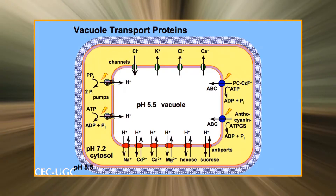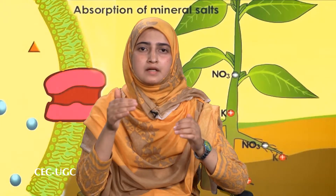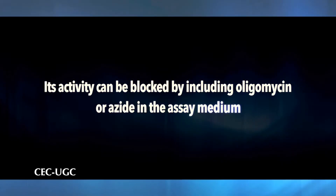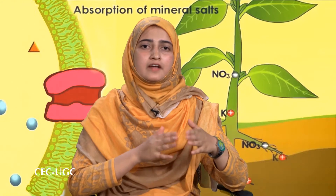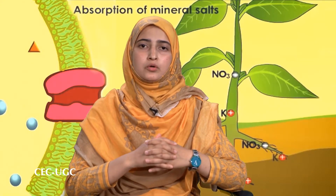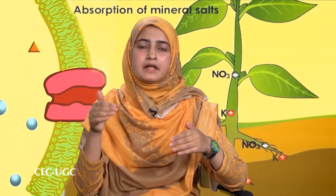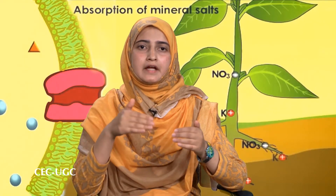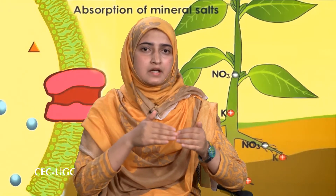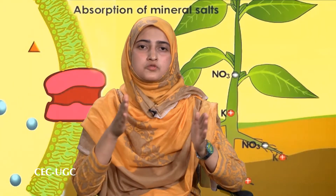The vacuolar-type ATPase proton pump (V-type) differs from the plasma membrane type in several ways. It is insensitive to vanadate but strongly inhibited by nitrate. In this respect it is similar to the mitochondrial F-type ATPase, which is also insensitive to vanadate. Its activity can be blocked by oligomycin or azide. Structurally, the V-type ATPase is more similar to the mitochondrial F-type ATPase than to the plasma membrane ATPase. Like the F-type, the V-type can be separated into hydrophobic subunits embedded in the membrane and a complex of soluble hydrophilic subunits. Although the soluble complex contains an ATP binding site, insensitivity of V-type ATPase to vanadate suggests it does not form a phosphorylated intermediate.